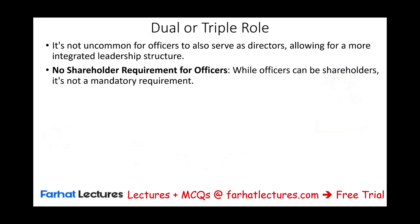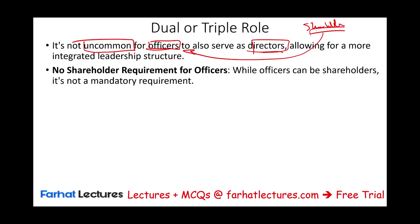It's not uncommon for officers to also serve as directors. So you can be an officer of the company, a director, and at the same time a shareholder. For small corporations, especially private ones, most likely the majority owners are also officers and directors of the company.